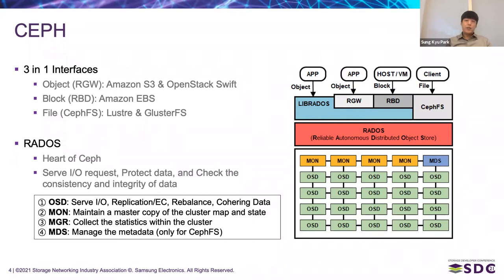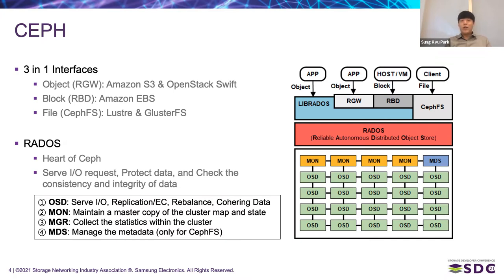Basically, CEPH provides a unified interface supporting object, block, and file. This is possible because of the core library called RADOS, which is located at the bottom of the three interfaces. Although the three interfaces have different characteristics regarding reliability requirements, RADOS is strict to provide strong consistency to serve a reliable storage service.